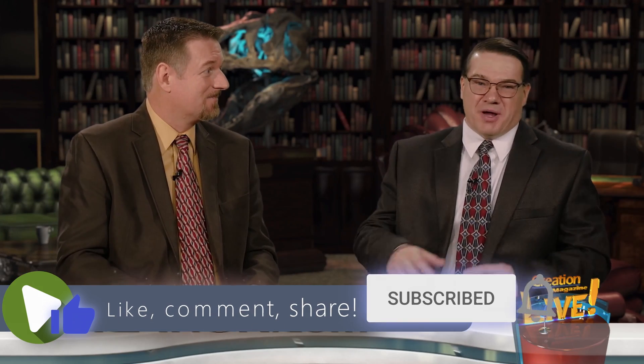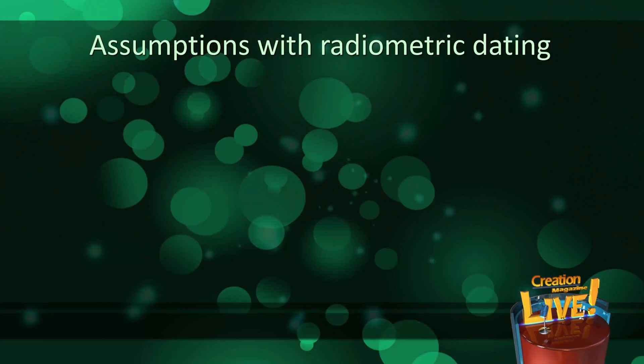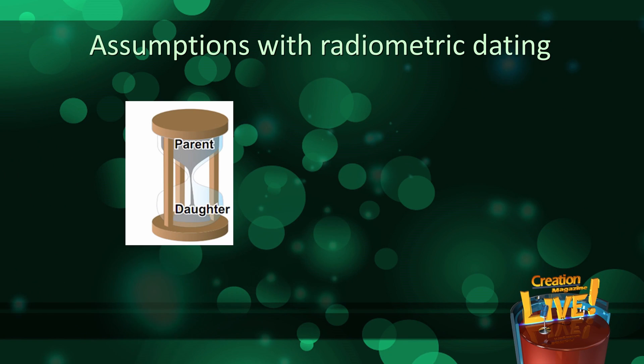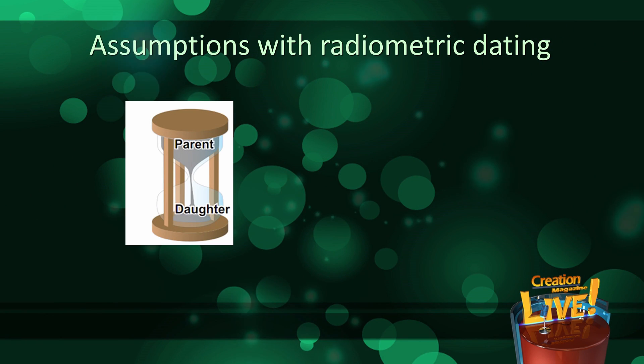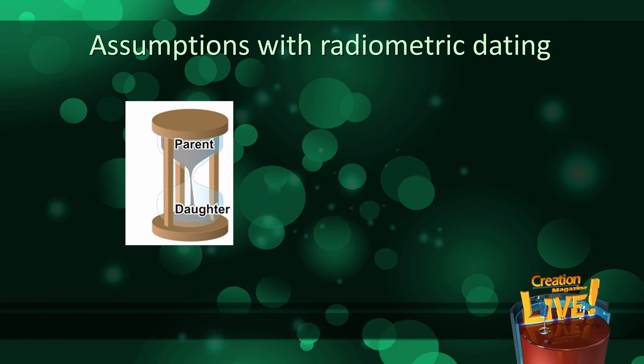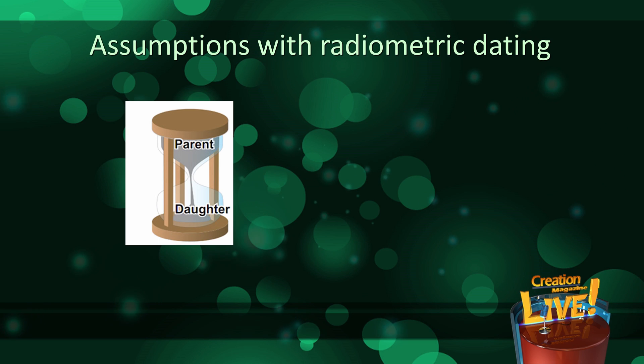With that explanation, it might be a little easier to see where the assumptions are. All dating methods involve making assumptions — you can't get around them. We can illustrate the assumptions involved in radiometric dating using an hourglass, where the radioactive parent isotope is the sand in the top, and over time it becomes the stable daughter isotope represented by the sand in the bottom.